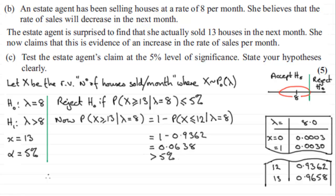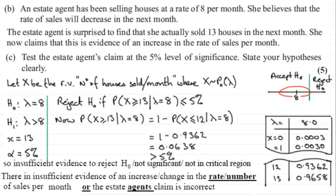In conclusion: there's insufficient evidence to reject H0, or it's not significant. This is from the answer scheme - they were happy if you said insufficient evidence to reject H0, or it's not significant, or it's not in the critical region. Your conclusion would be that there is insufficient evidence of an increase in the rate of sales per month, or the estate agent's claim is incorrect.